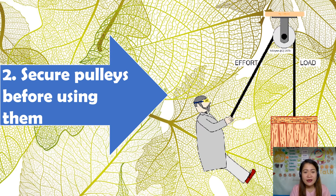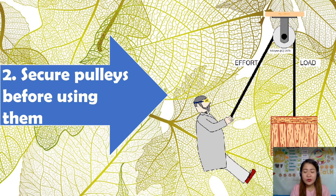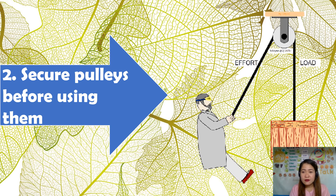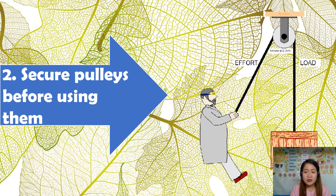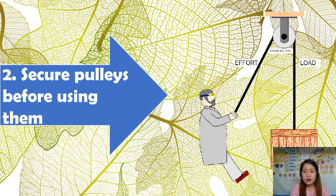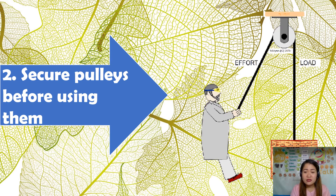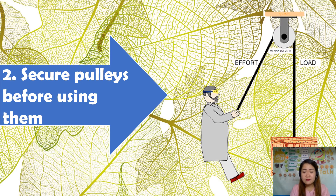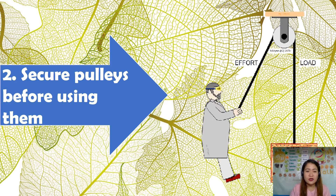Number two: secure pulleys before using them. It is very important for us to always check if the pulley that we are using is properly connected. This is important because pulleys help us carry heavy objects, and if the pulley is not properly connected and the screw is not well attached, we could encounter an accident.